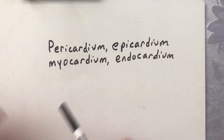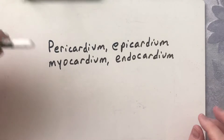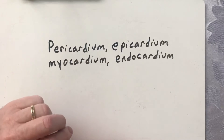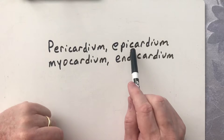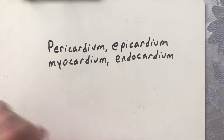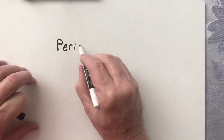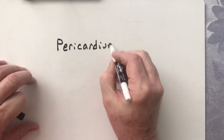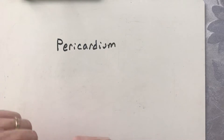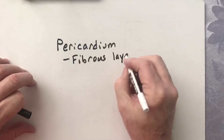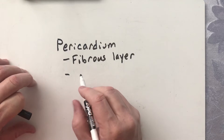Today we are going to be talking about the wall of the heart and the pericardium. The pericardium is a sack that the heart sits in. The wall of the heart is made up of the epicardium, the myocardium, and the endocardium. The pericardium, also known as the pericardial sac, has two layers: the fibrous layer and the parietal layer.